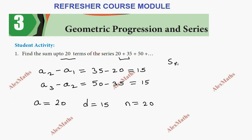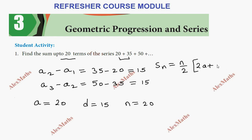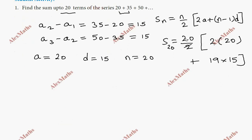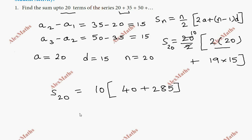Sum up to 20 terms: n = 20, using the formula S_n = n/2 × (2a + (n−1)d). Substituting: S_20 = 20/2 × (2×20 + (20−1)×15) = 10 × (40 + 285) = 10 × 325 = 3250.